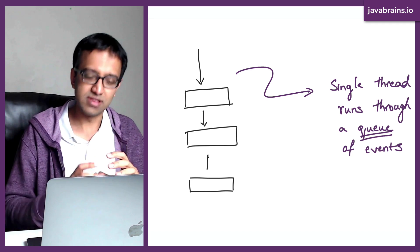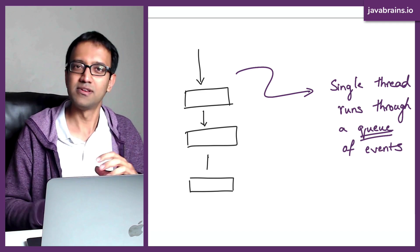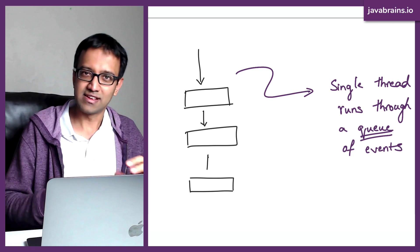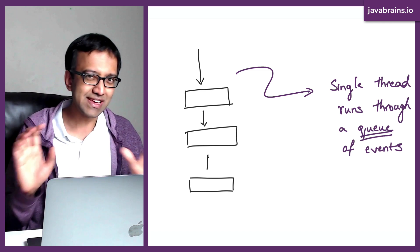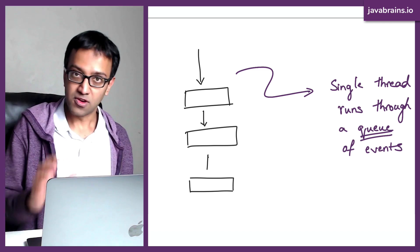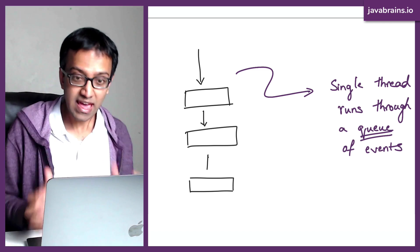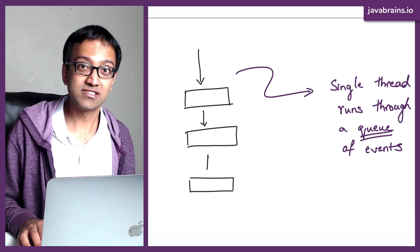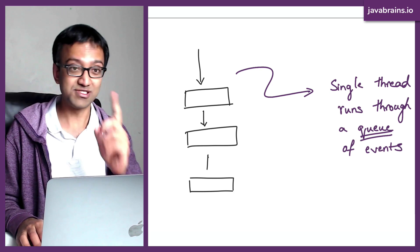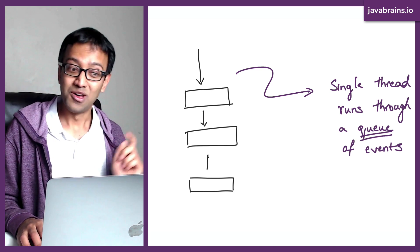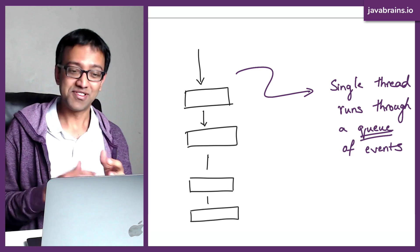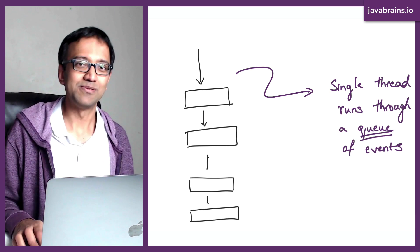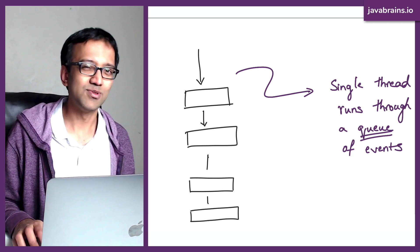It executes one item, then the next one, then the next one — there are no two things happening in parallel. So if you go to Node.js and say, hey, I have this thing, can you please execute it? Node.js says: there's a queue here, go right to the back. After I'm done executing all these things, I'm going to come to you. This is how Node.js works.